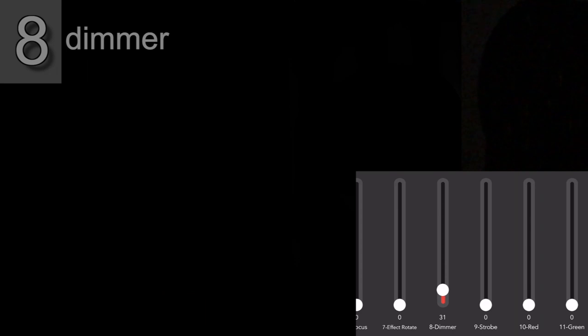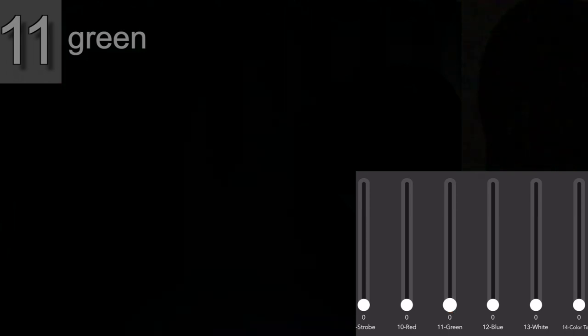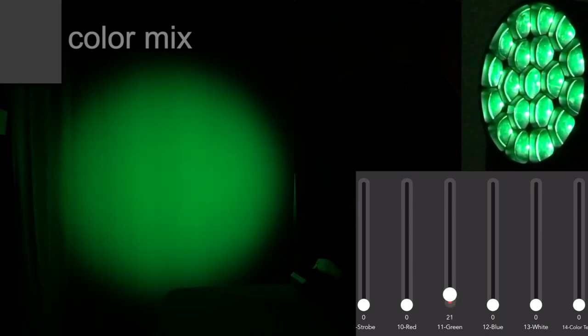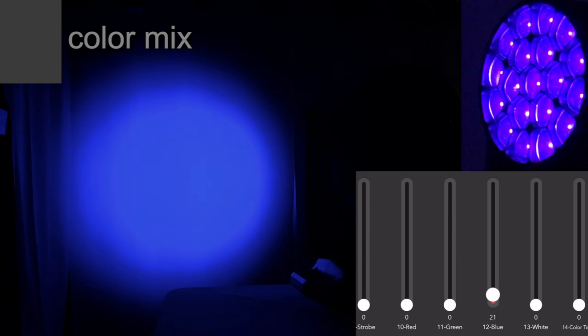So first let's bring up the dimmer a little bit. And then you can see that on channel 10 you can control the red, 11 the green, 12 the blue, and 13 the white. You can color mix these in any combination. We'll leave blue up.